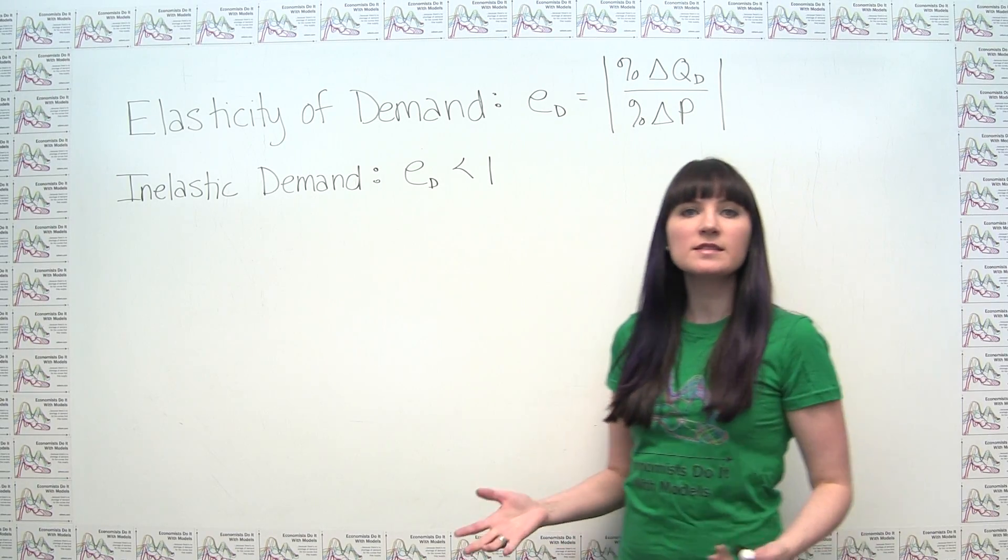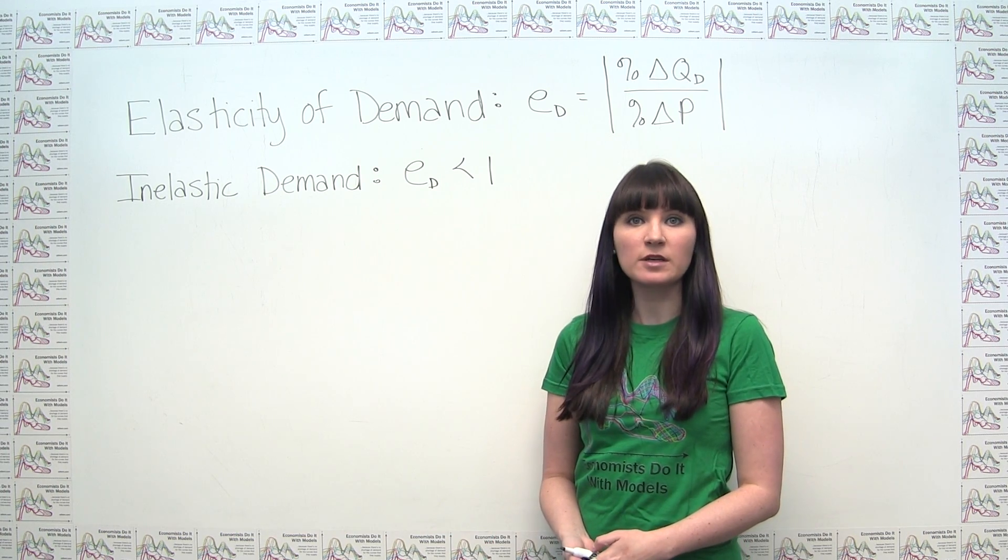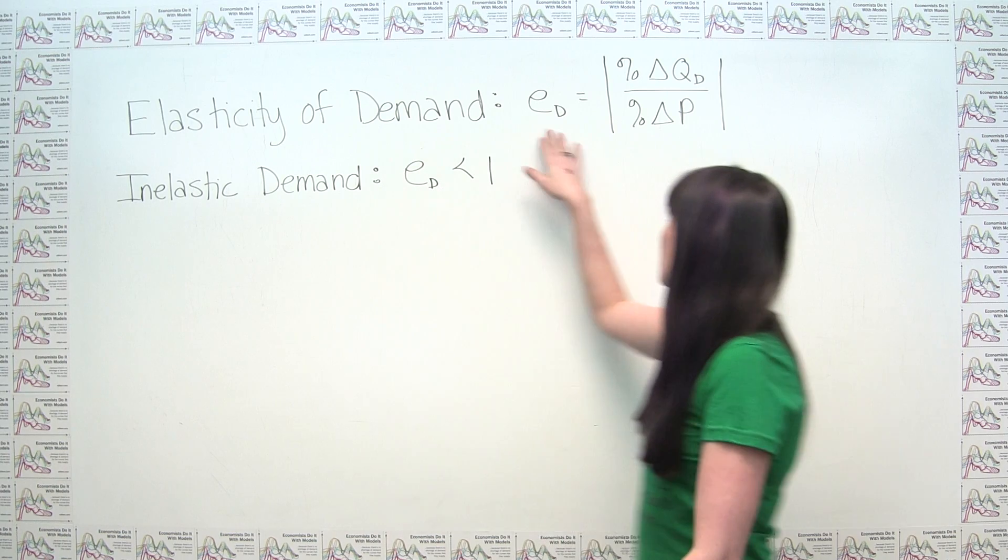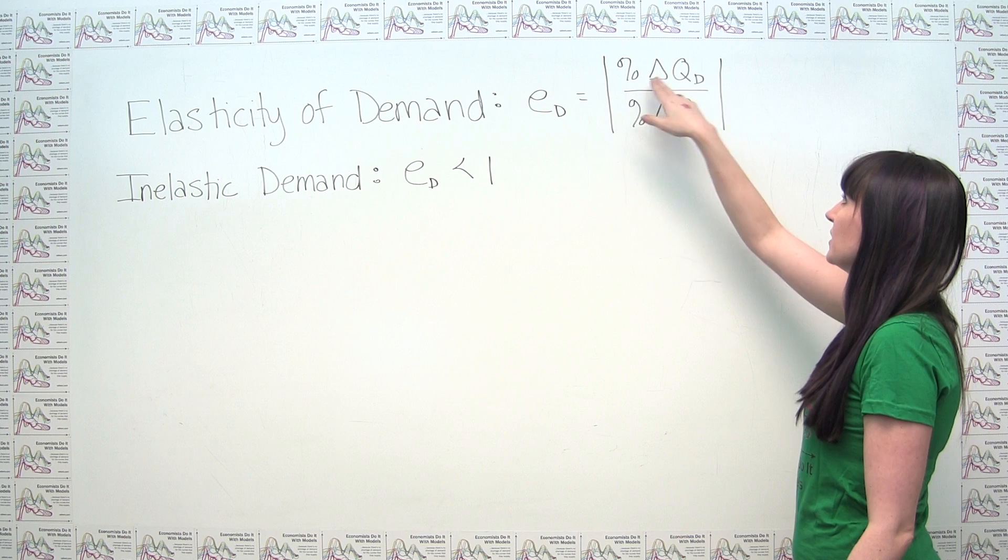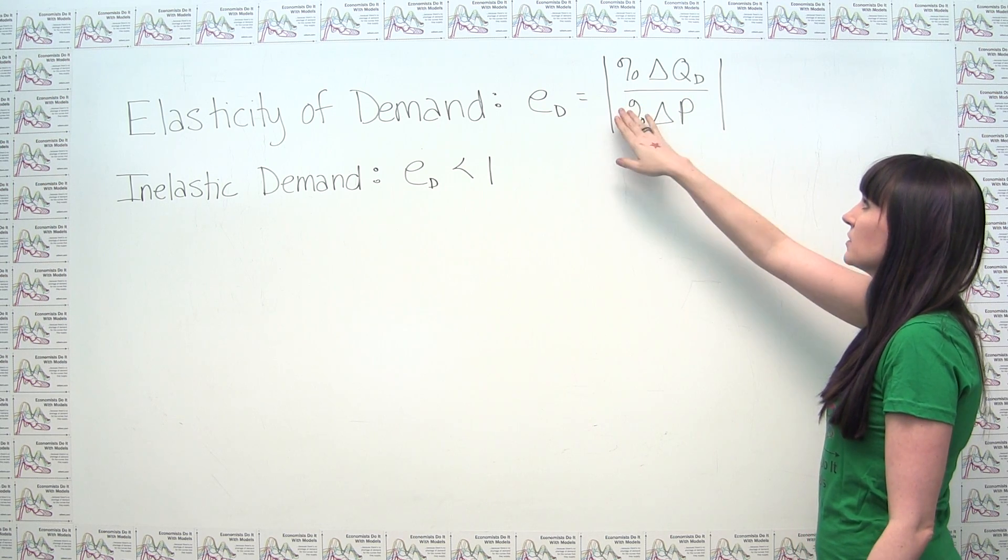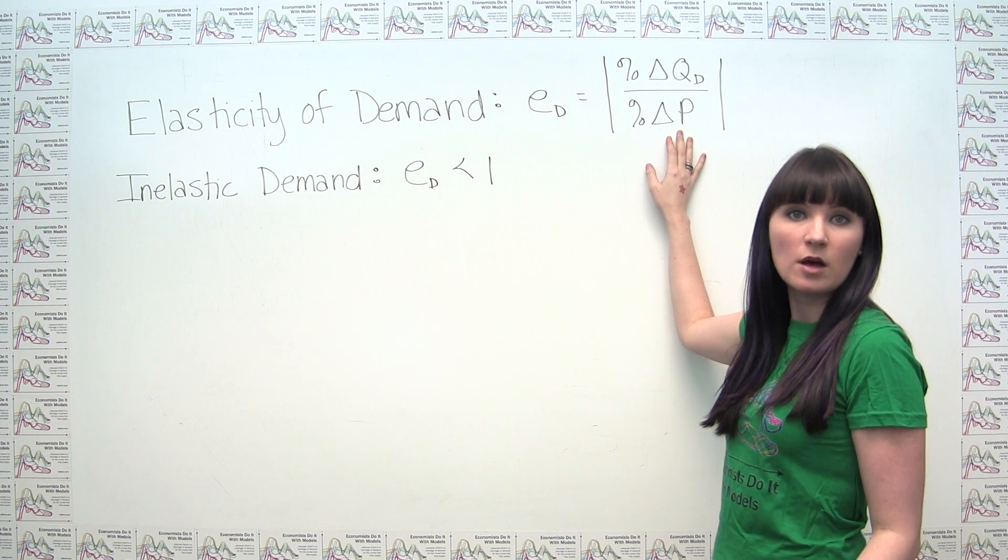As a reminder, elasticity of demand, or price elasticity of demand to be more specific, is defined as follows. The elasticity of demand is just the absolute value of the percent change in quantity demanded divided by the percent change in price at a particular point along the demand curve.